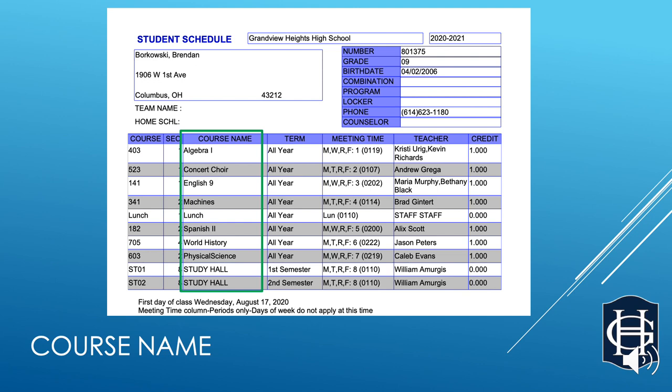The column labeled Course Name is just that — these are the courses you signed up for when we did scheduling. In some cases, one of your alternative choices may be listed here. This is pretty much the order you will follow your schedule, but there will be more on this shortly.